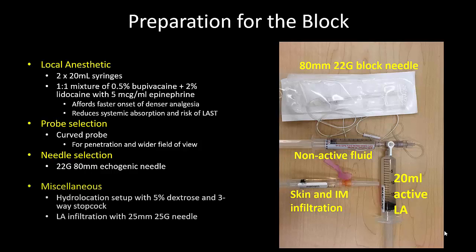To avoid wastage of local anesthetic, it is recommended that hydrolocation with an inert fluid such as dextrose 5% be used to confirm entry into the correct tissue plane. Finally, for patient comfort, we usually infiltrate the skin and underlying muscle along the needle track with 2 to 3 ml of lidocaine.